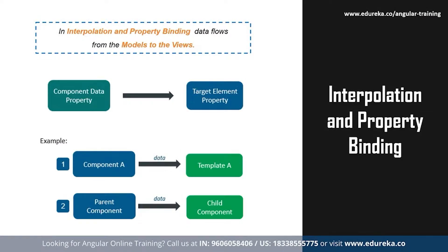Talking about property binding: in property binding, the value flows from a component's property into the target element's property. Property binding can be used to read or pull data from the target elements or to call a method belonging to that element. Events raised by the element are handled through event binding, which will be covered later. In general, the component property value is set to the element property using property binding.